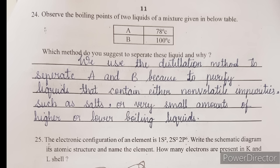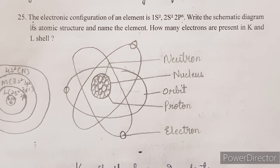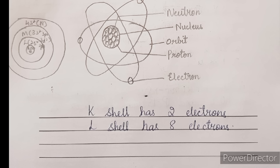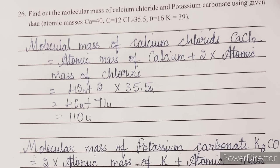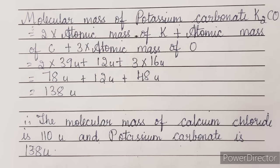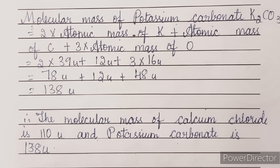Next question: the electronic configuration of an element is 1s², 2s², 2p⁶. Write the schematic diagram of its atomic structure and name the element. How many electrons are present in K and L shell? The answer: K shell has 2 electrons, L shell has 8 electrons. I have written the diagram here — this carries four marks, you can refer to it.